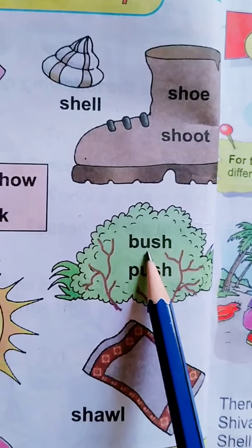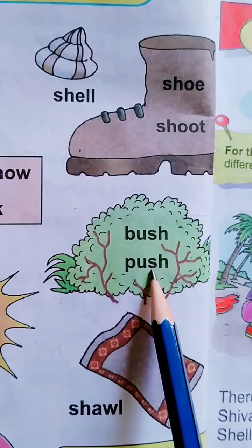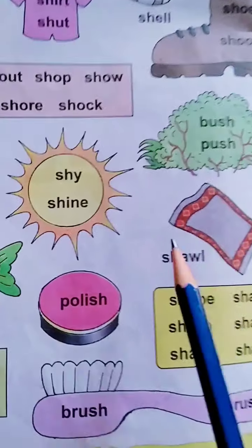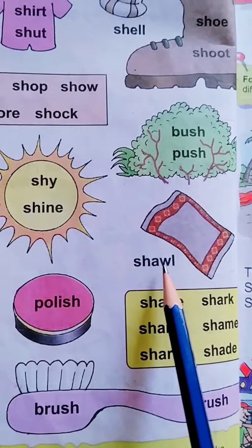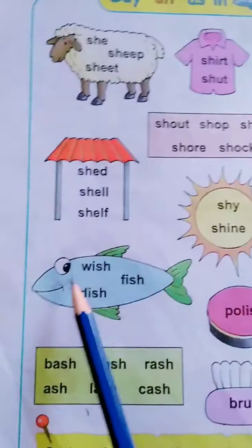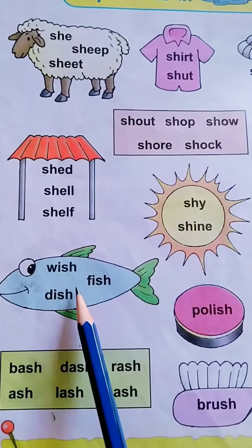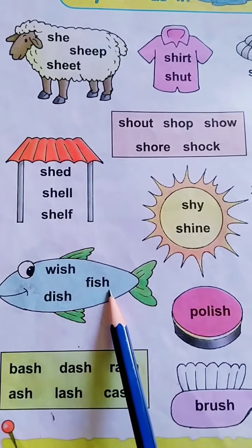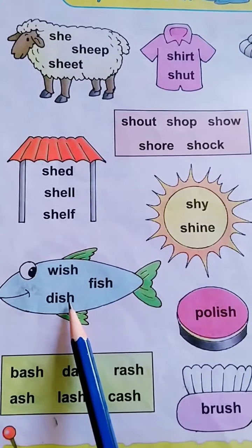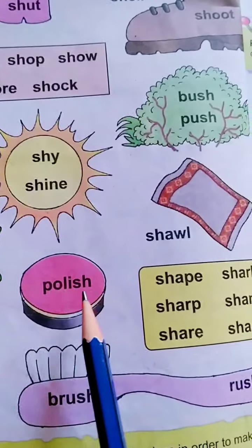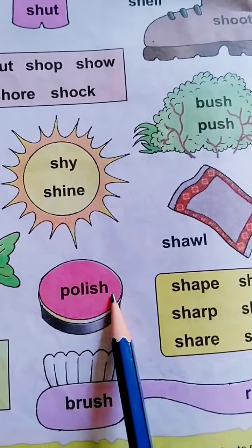SHUSH. BUSH. F-I-S-H: Fish. D-I-S-H: Dish. P-O-L-I-S-H: Polish.